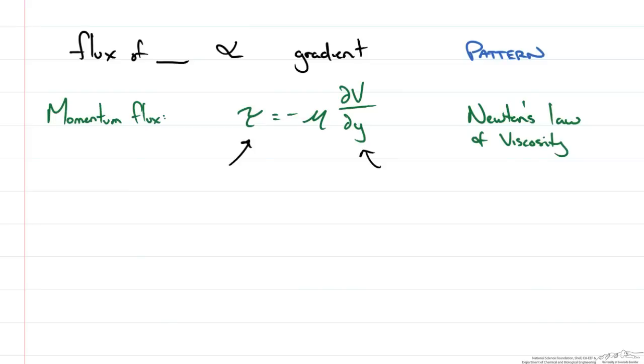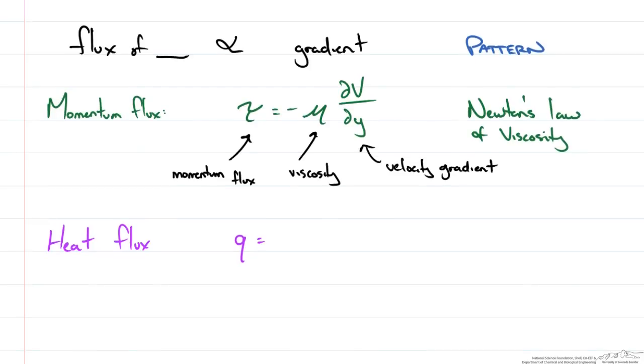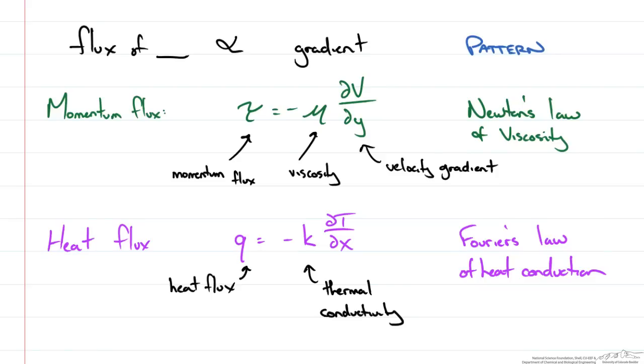Our heat flux, Q, was equal to negative k dT dx. This was Fourier's law of heat conduction. Where this was our heat flux, this was the thermal conductivity of our material, and this is our temperature gradient. So what is to believe that mass flux wouldn't follow the same form.